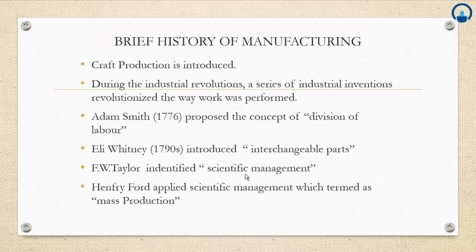Brief History of Manufacturing. Widespread production of consumer goods did not begin until the Industrial Revolution in the 1700s. Earlier, customized goods were produced by skilled craftspersons — a type of production called craft production, which involves the hand-crafting of products or services for individual customers. During the Industrial Revolution, mechanically powered machines replaced the laborer as the primary factor of production and factories emerged as a central location for workers to perform tasks under the direction of supervisors or foremen. Adam Smith in 1776 proposed the concept of division of labor, in which the manufacturing process was broken down into a series of small tasks each performed by a different worker.